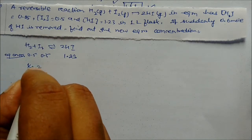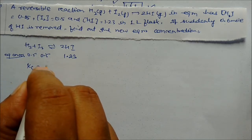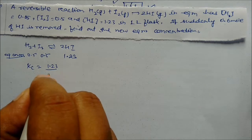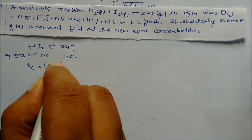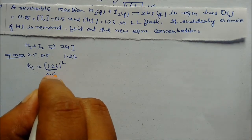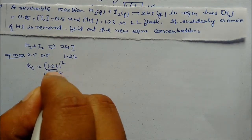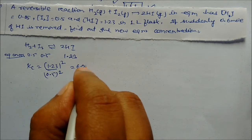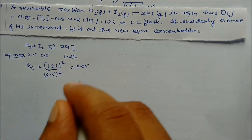Kc will be (1.23)² divided by (0.5)², and on solving you will get Kc = 6.05.